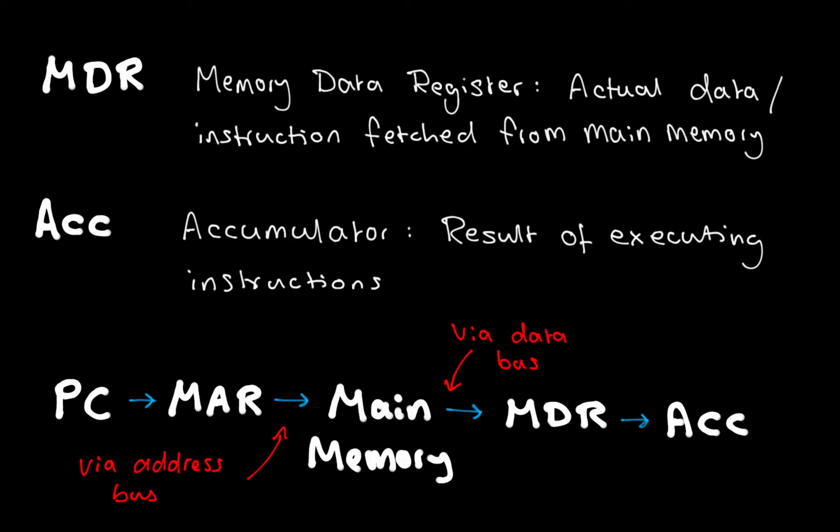The fetch-execute cycle and von Neumann architecture follows this pattern. First, we copy from the program counter to the memory address register to get the next instruction. Then, using the address bus, we go to main memory, grab whatever we need, and send it back via the data bus to the memory data register. Finally, we decode and execute it using the control unit or the arithmetic logic unit, and then store the result in the accumulator.